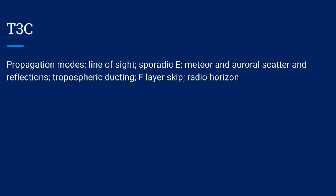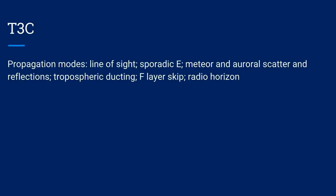T3C: Propagation modes. Line of sight, sporadic E, meteor and auroral scatter and reflections, tropospheric ducting, F layer skip, and radio horizon.